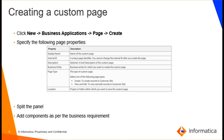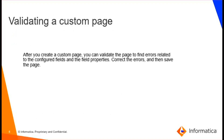A blank page with a panel appears. You can either split the panel as per the business requirement or use it as is. Then we add components in the panels. We can either go ahead and add more panels and tabs, or we can save the custom page. Once the page is created, we need to validate the page. Once we validate, we will see if there are any errors related to the configured fields and field properties. Before saving the page, correct the errors and then save.